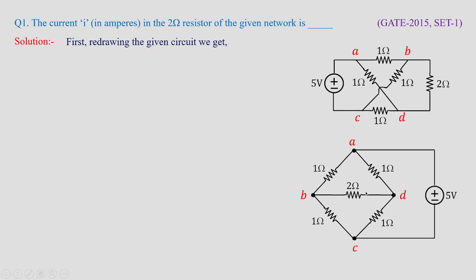For beginners, this is the easy way to assume and redraw the given problem so that you can easily find out the resistance values and how the current or voltage is obtained across the given resistance. After redrawing this circuit, what analysis are we going to do? We have loops — one triangular loop, a bottom triangular loop, and a loop connected between the two 1 ohm branches.